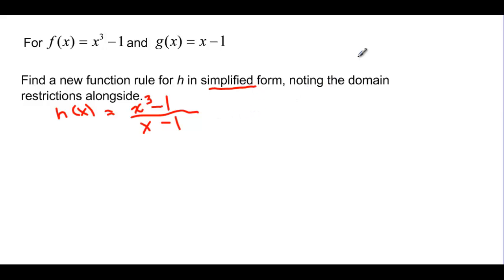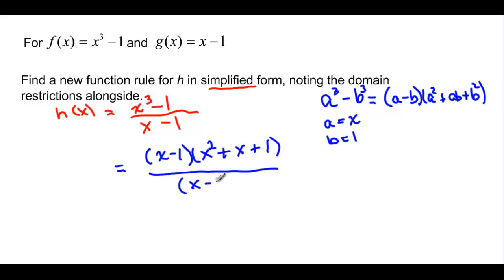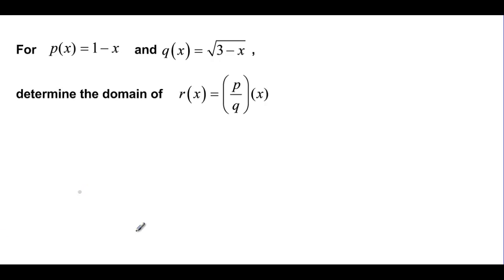It says find the function in simplified form. So h of x is x cubed minus 1 over x minus 1. Remembering the difference of cubes formula — a cubed minus b cubed equals a minus b times a squared plus ab plus b squared — with a equals x and b equals 1, we get x minus 1 times x squared plus x plus 1, all over x minus 1. Canceling gives x squared plus x plus 1, as long as x is not equal to 1.